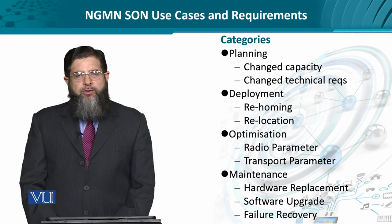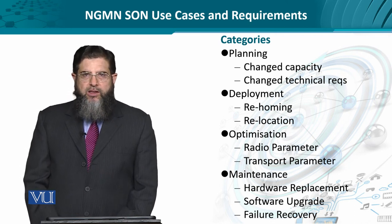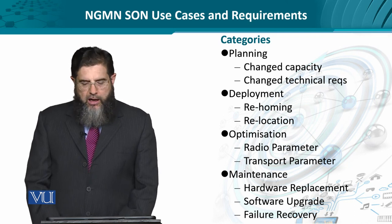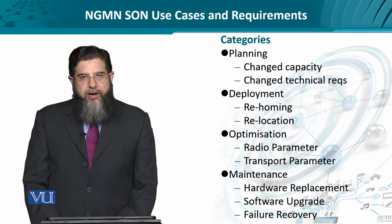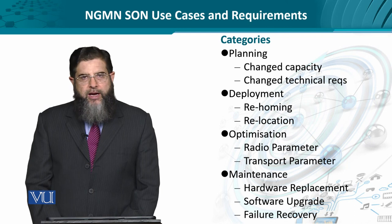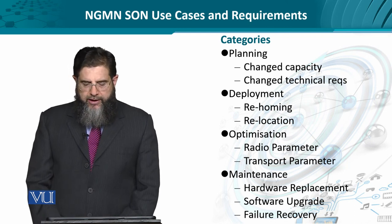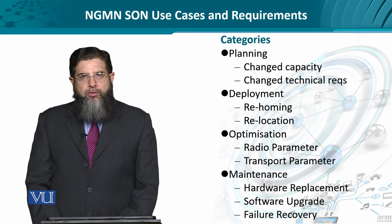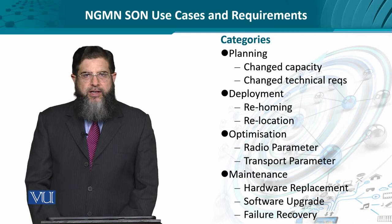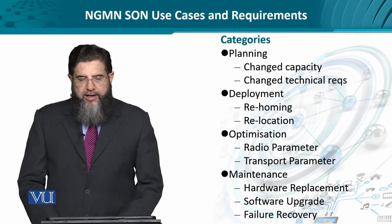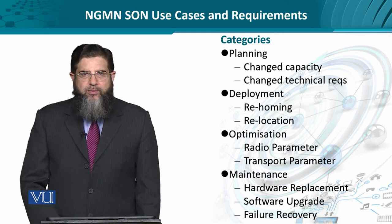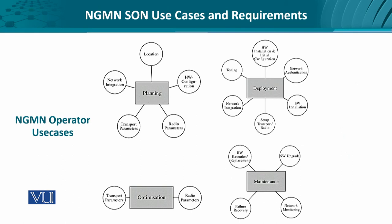So some kind of continuous tracking is done using the radio parameters at the physical layer and the transport parameters at the higher layers. Maintenance is a continuous activity as well, which includes hardware upgrade, replacement, software upgrade, service patches, new software releases, security patches, and if there is a failure, failover and failure recovery mechanisms are also needed.